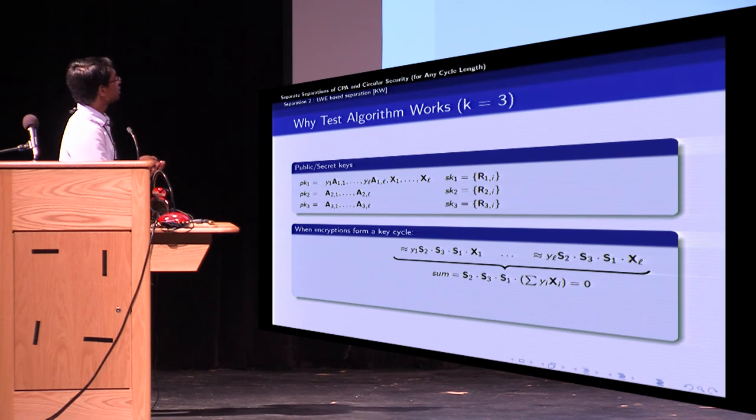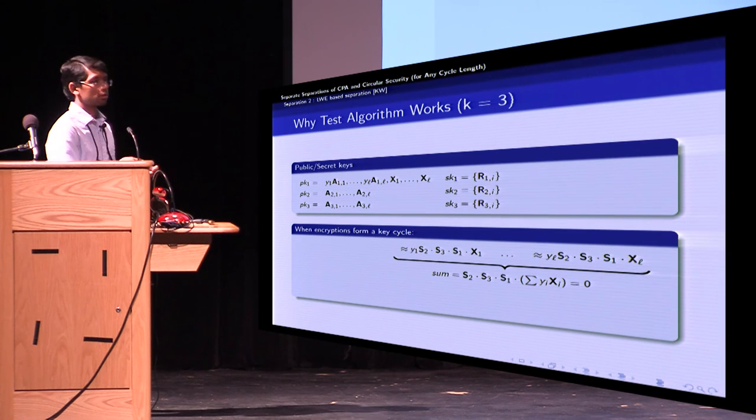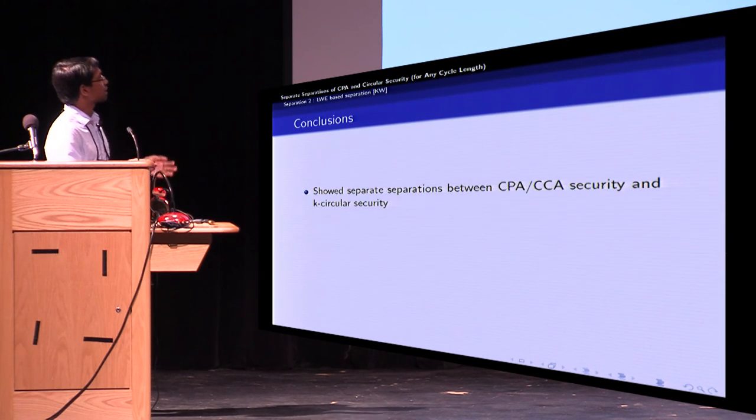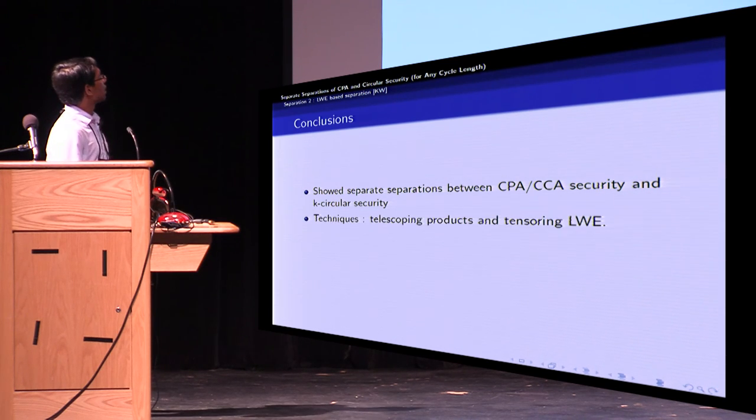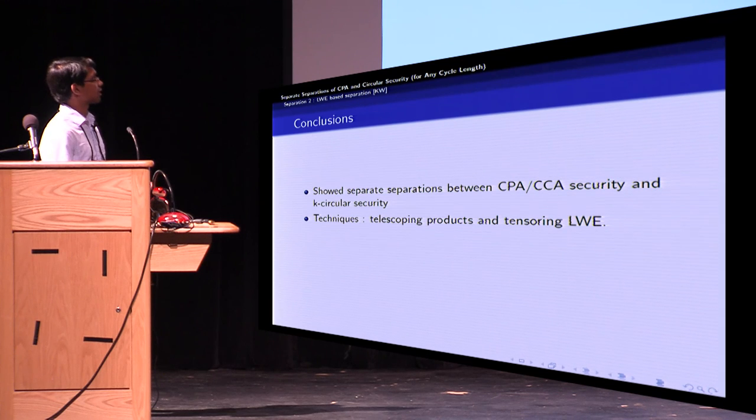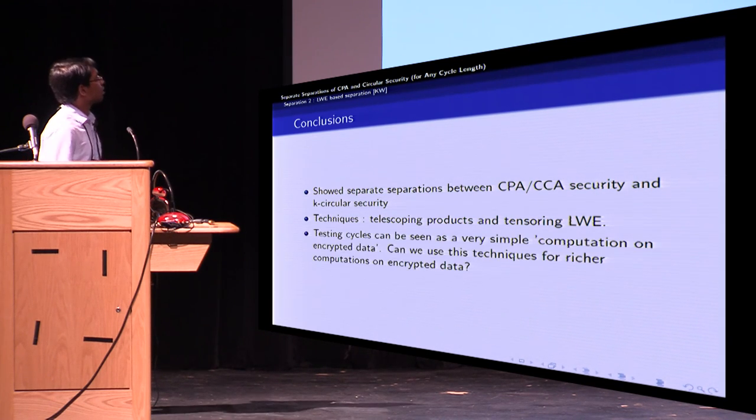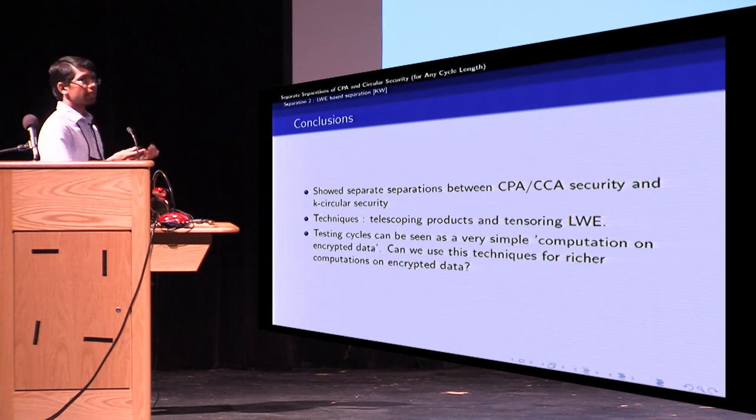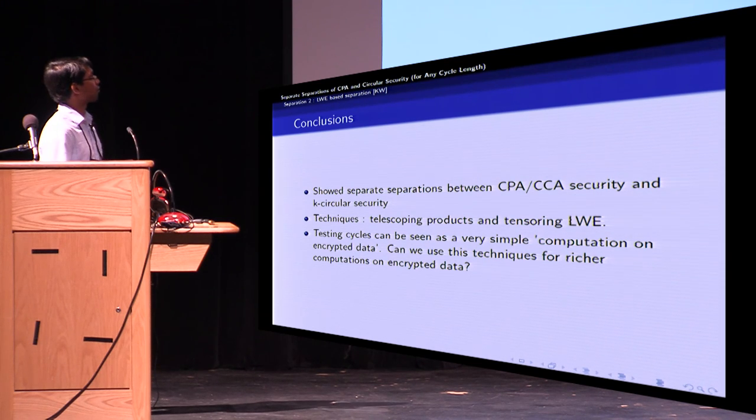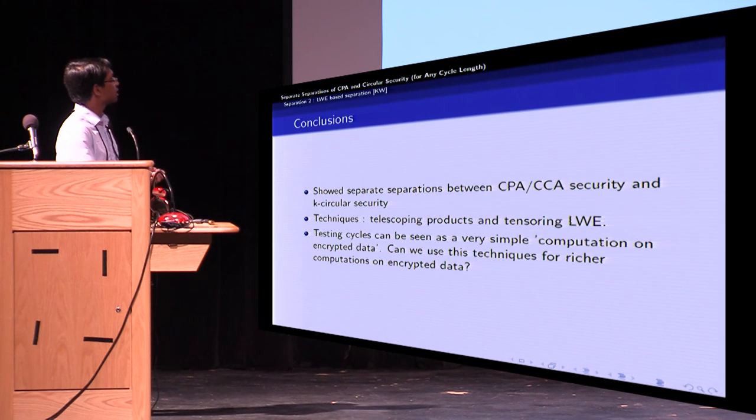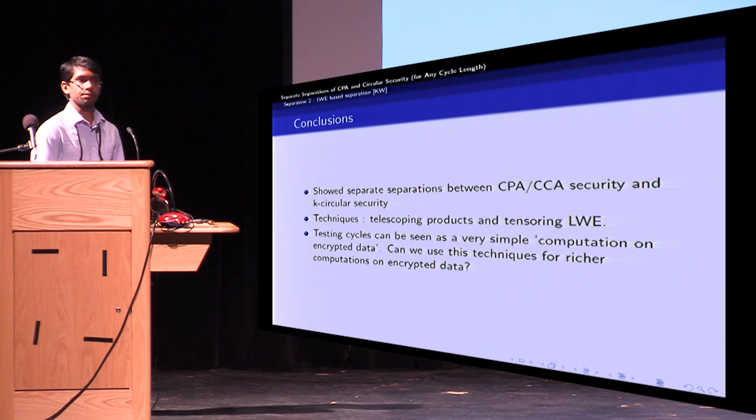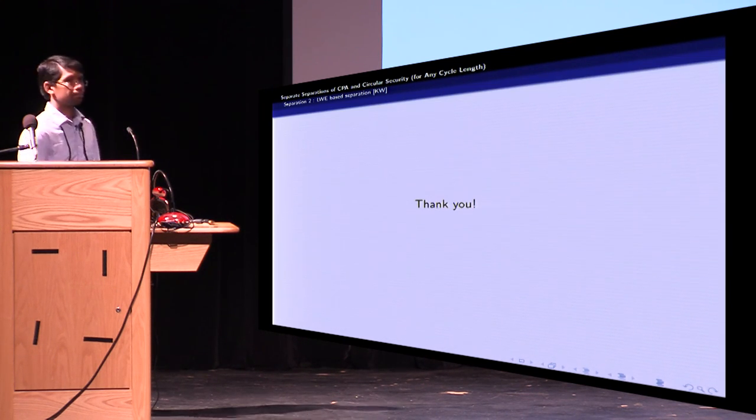So that concludes the construction. I won't talk about the proof. To conclude, we show separations between CPA and CCA security and K circular security. And some of the techniques used are telescoping products and tensoring LWE. And looking back, so testing cycles can be seen as a very simple form of computation on encrypted data. So a question, natural question is, can we use these techniques for richer computations on encrypted data? So that concludes the talk. Thank you.